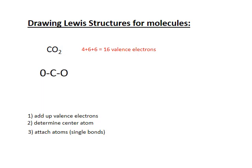Each bond represents two electrons, so two single bonds use up four electrons, leaving 12 more to distribute. I try to complete the octet on at least one atom and then distribute the remaining electrons symmetrically, and work from there.